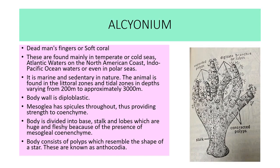Second example is Alcyonium, known as dead man's fingers or soft coral. They are found mainly in temperate and cold seas, in Atlantic waters. On the North American coast it is marine and sedentary in nature, found in the littoral and tidal zones. The body is diploblastic. Mesoglia has spicules throughout, providing strength to the coenenchyme. The body is divided into base, stalk, and lobes — which are huge and fleshy due to mesoglial coenenchyme. The body consists of polyps that resemble the shape of a star, known as anthocodia.